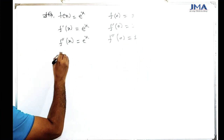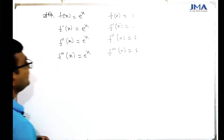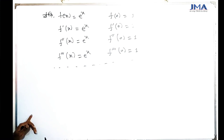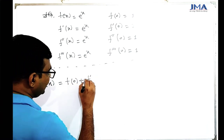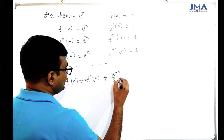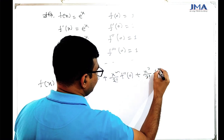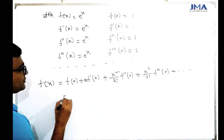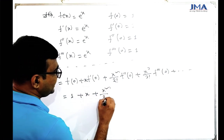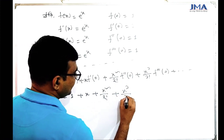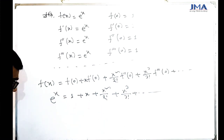f triple prime of x is also e to the power x, so f triple prime of 0 equals 1. We don't need to keep computing derivatives. The full Maclaurin series for e to the power x is: f(x) equals f(0) plus f'(0)·x plus f''(0)·x squared by 2 factorial plus f triple prime(0)·x cubed by 3 factorial, giving: 1 plus x plus x squared by 2 factorial plus x cubed by 3 factorial, continuing to infinity.